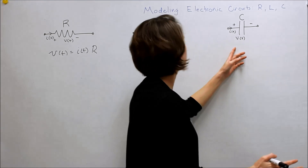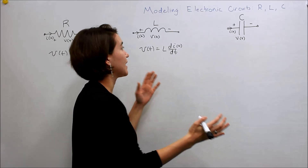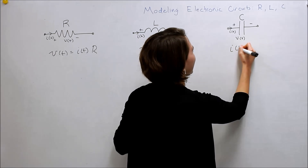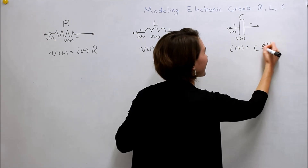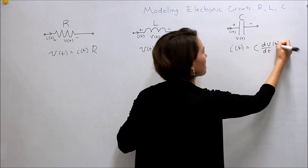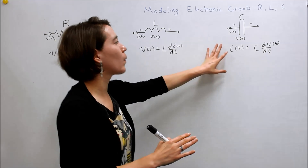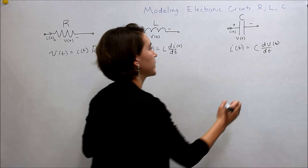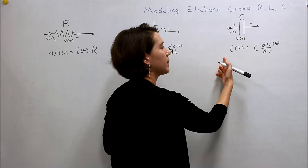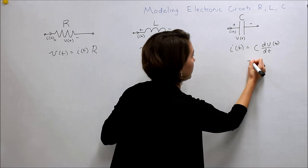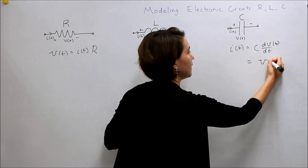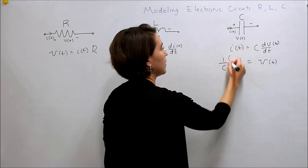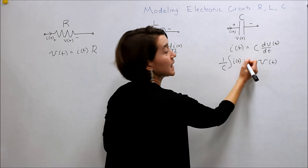For the capacitor, I always memorize pretty much the opposite: I of T equals C·dV/dt. Most of the time we're actually going to need voltage by itself, so we're going to flip this around to solve for V of T. If we divide by C on both sides and then take the integral, we'll end up with V of T on this side, equal to 1 over C times the integral of I(T) dt.